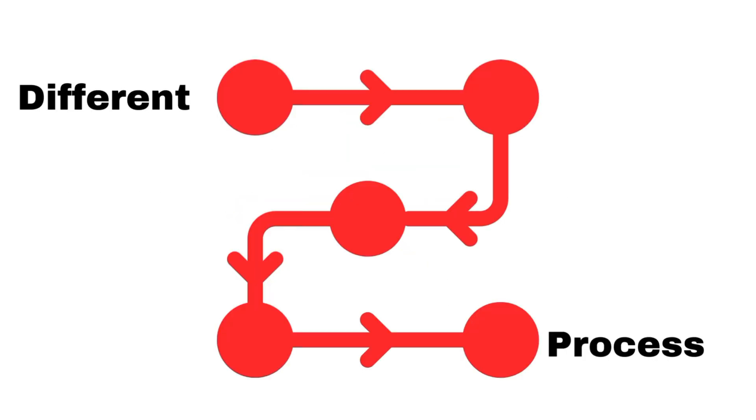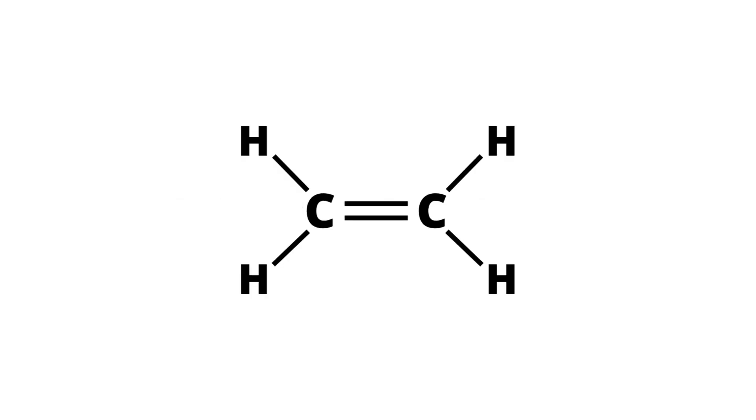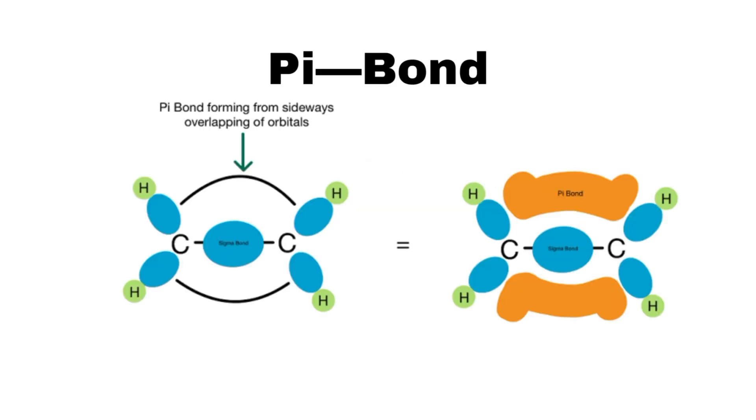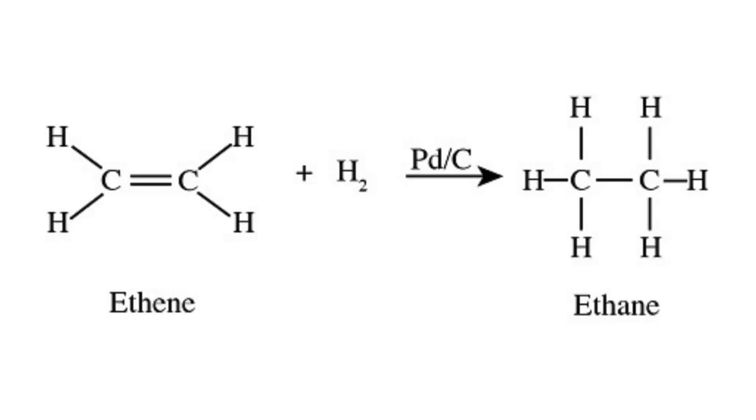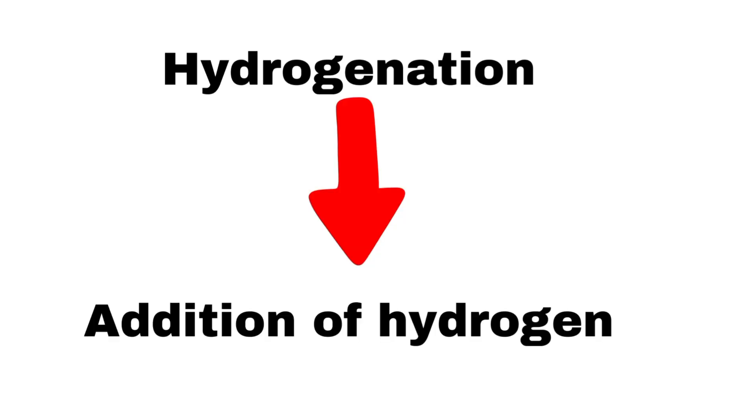Organic reactions typically fall into several main categories such as addition, substitution, elimination, and rearrangement, each involving different processes with distinct outcomes. Addition reactions occur when two or more molecules combine to form a single product. This type of reaction is common in unsaturated compounds such as alkenes and alkynes, where a pi bond is broken and new sigma bonds are formed. For example, the addition of hydrogen to ethene in the presence of a catalyst forms ethane — this is known as hydrogenation.